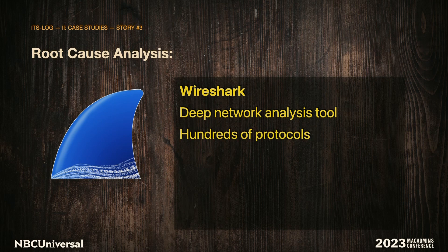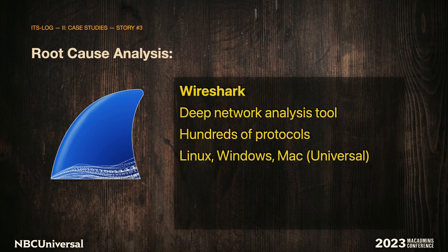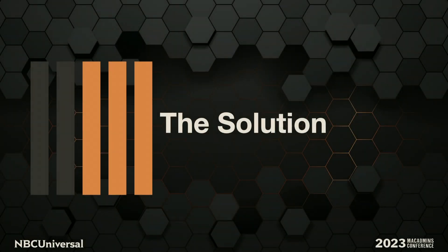Wireshark includes hundreds of protocols including Samba and TCP/IP. You can examine Wi-Fi packets and trace negotiations of all different kinds. It's free and open source, and it really helped us figure out what was wrong because we could see the Samba conversations in there. The solution to this problem of getting logs faster from users and also trying to get their stories is what we're going to talk about today.